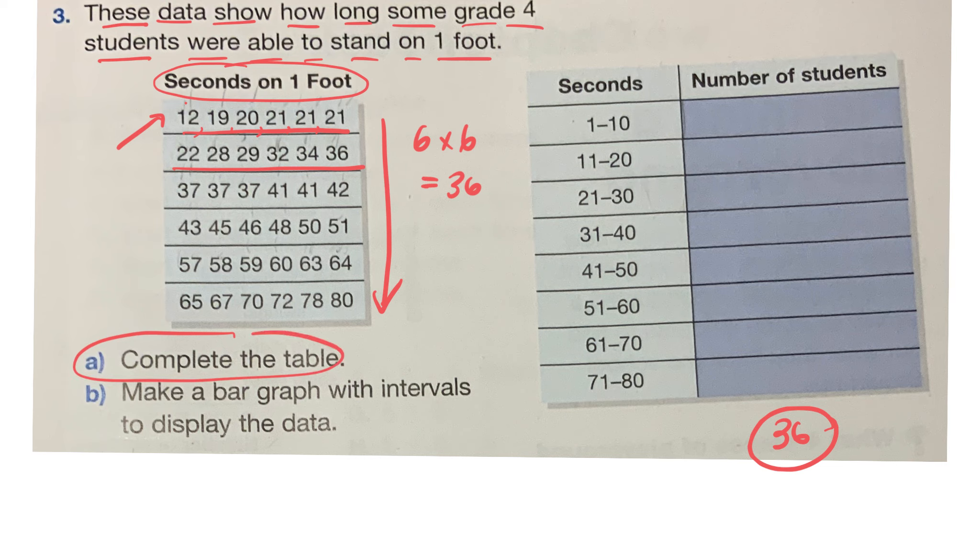So first we have to complete the table. We have to figure out the number of students that stood on one foot for between one and ten seconds. Let's look at the chart. Zero, so none. Let's look at how many students stood on one foot for between eleven and twenty seconds. Three. So between eleven and twenty, we have twelve, nineteen, and we would include twenty. So that would be three students.